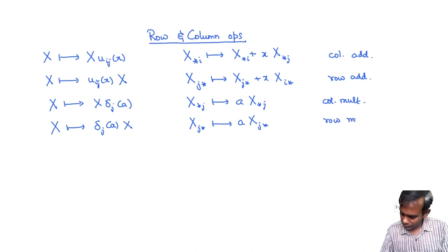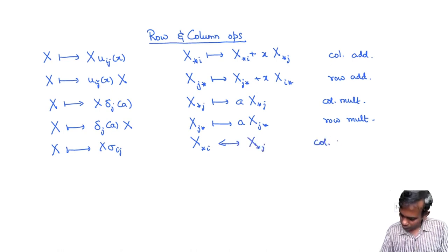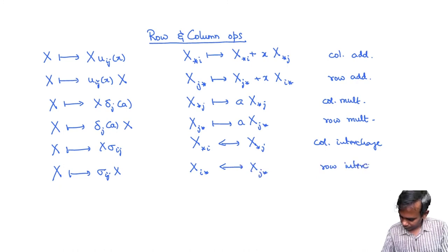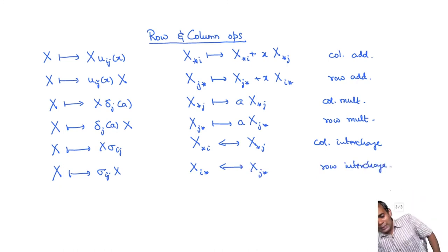And x times sigma_ij. So if I take x goes to x times sigma_ij this is just interchange the ith column of x with the jth column of x. So this is the column interchange operation. And finally x goes to sigma_ij times x is the row interchange operation. We interchange the ith row and the jth row of x. I am sure most of you have seen these row and column operations before and they are not very difficult to prove. If you are finding difficult to prove them in general just try with two by two matrices at first and then you will see the pattern.